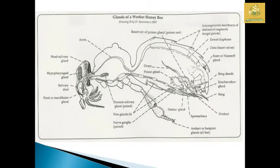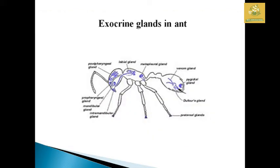I have given a diagrammatic representation of those glands in this picture, so you can see that. I have also given another example of the exocrine glands present in the ant.